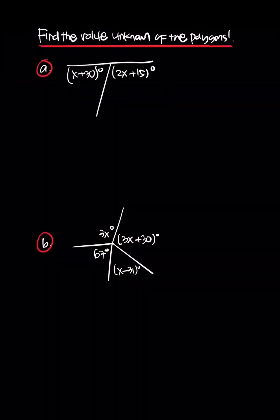Let's solve this question. We have a polygon here with x plus 30 degrees and 2x plus 15 degrees. Because this is a linear angle, this equals 180 degrees. Now we collect like terms.